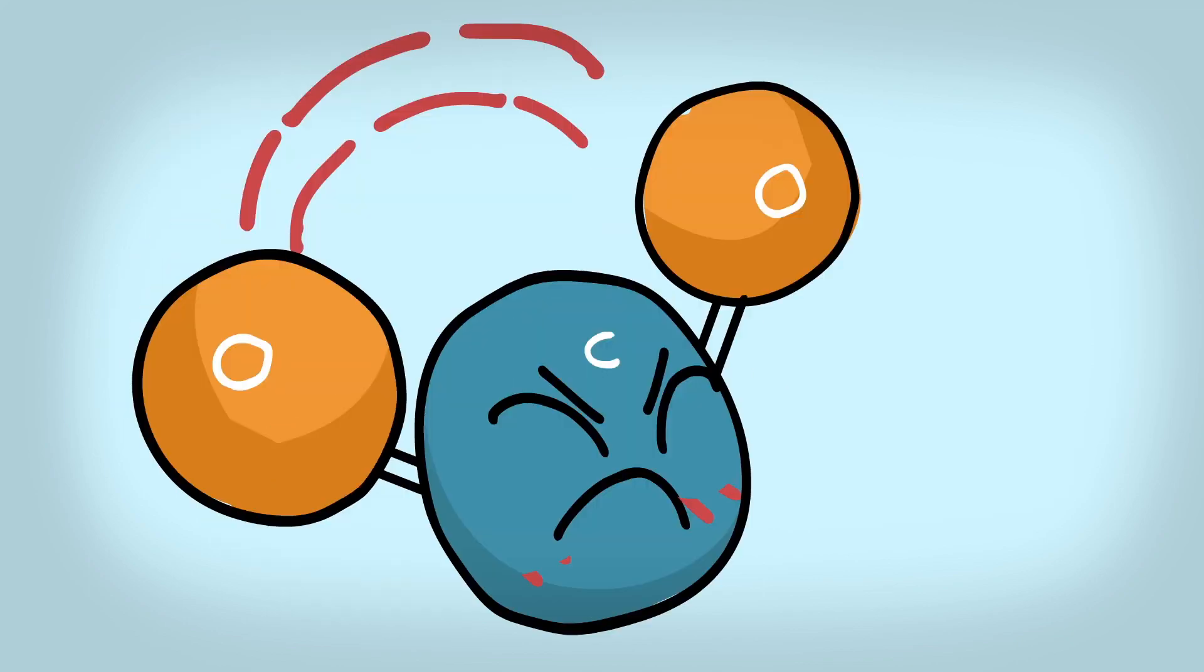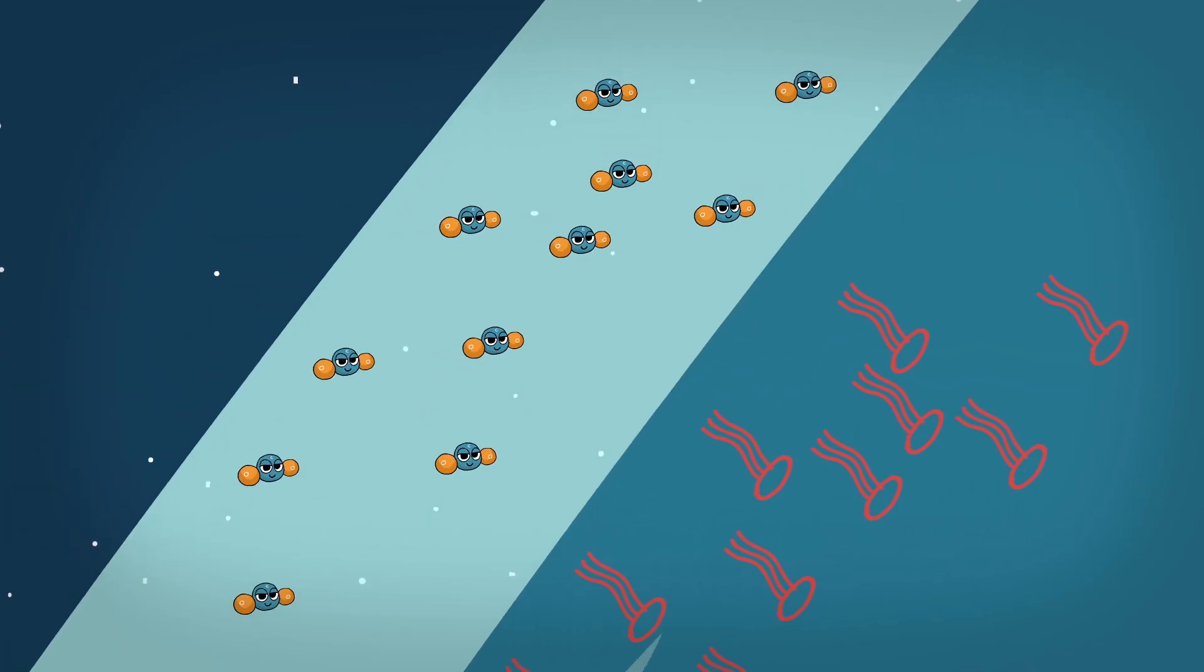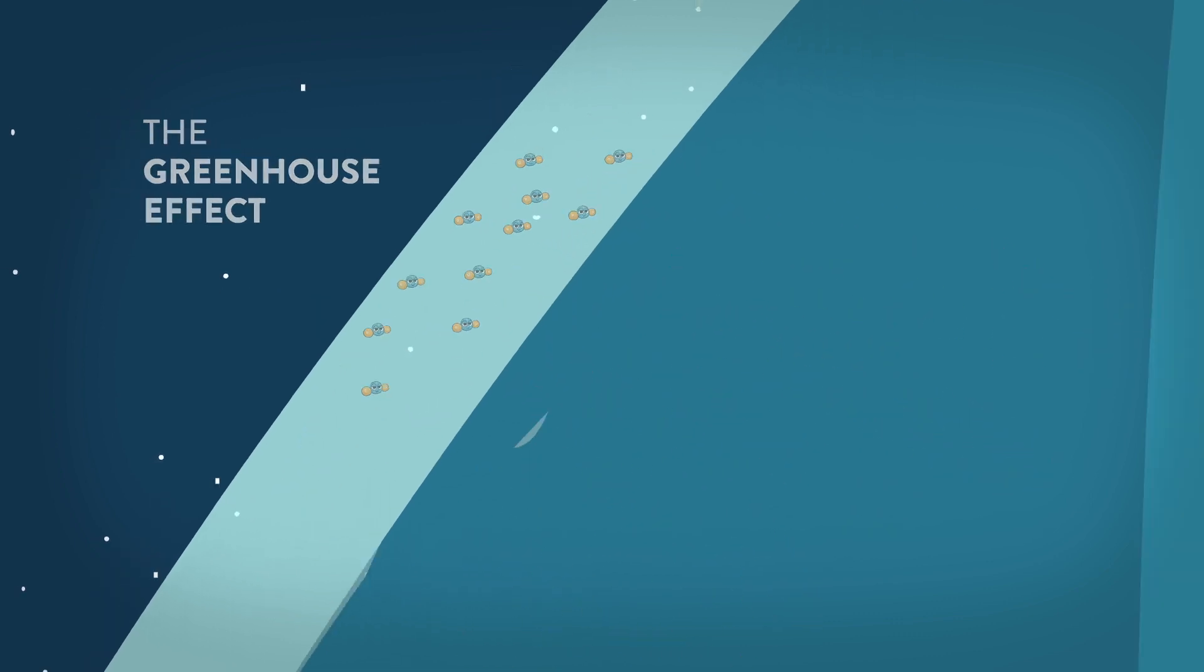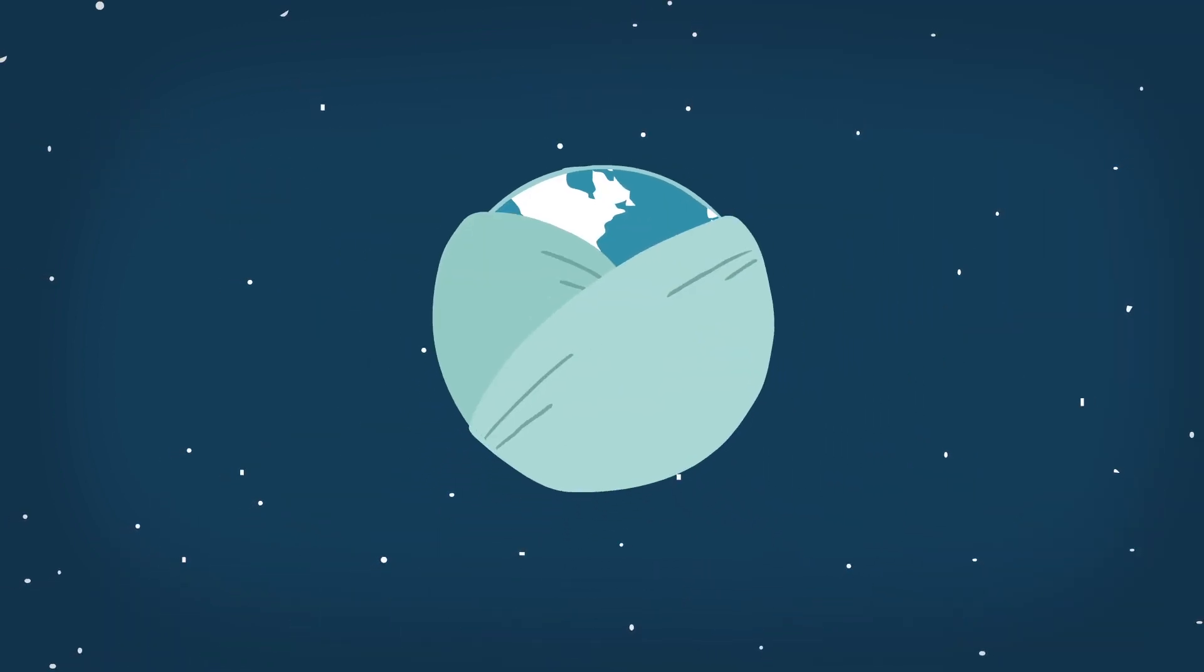This is called the greenhouse effect. For billions of years, these gases have given earth a kind of blanket that's kept it nice and warm. They've made life possible.